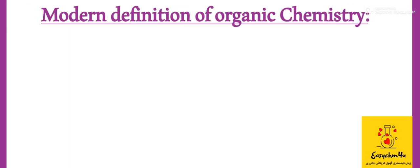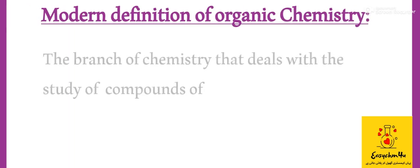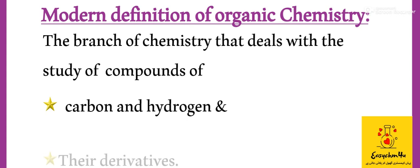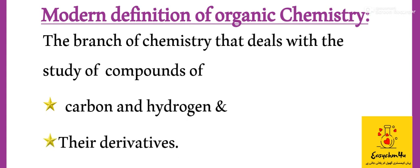The modern definition of organic chemistry is the branch of chemistry that deals with the study of compounds of carbon and hydrogen and their derivatives. What does derivatives mean?